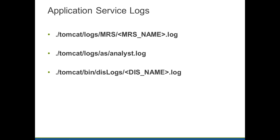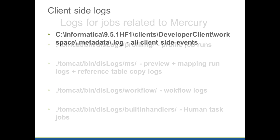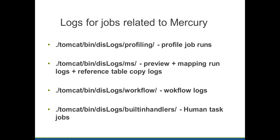Application services have a different set of logs. For each service, we have logs under Tomcat Logs AS and Tomcat Logs MRS. All jobs related to Mercury can be found in Tomcat Logs for profiling, and DIS log slash MS for preview, data preview, mapping run, and reference table copy. DIS log slash workflow is for workflows run in the Mercury domain. Built-in handlers have logs related to human task jobs.